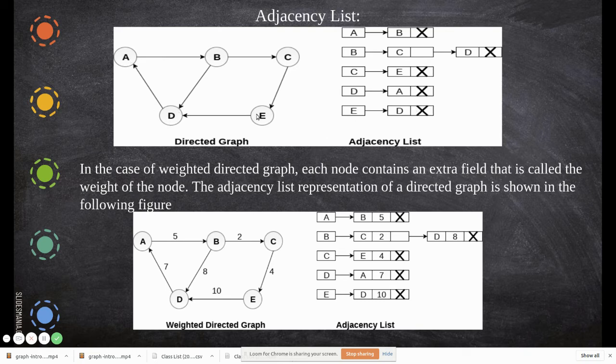Then E. E to D. So it can be represented. Adjacency list for a directed graph can be represented like this.